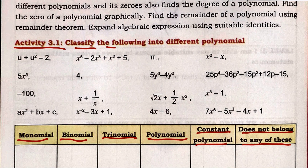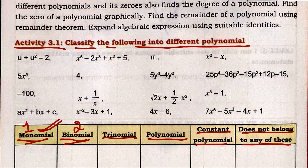Let's start with Activity 3.1 — classify the following into different types of polynomials. A monomial is an expression with only one term. A binomial is an expression with two terms. A trinomial is an expression with three terms. More than three terms is called a polynomial. A number alone is called a constant polynomial.